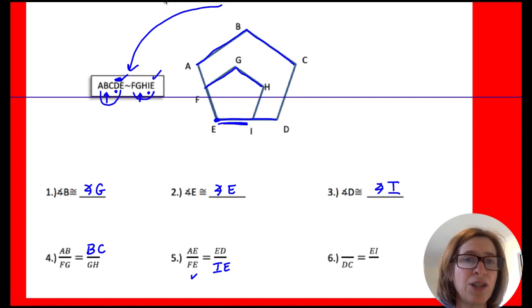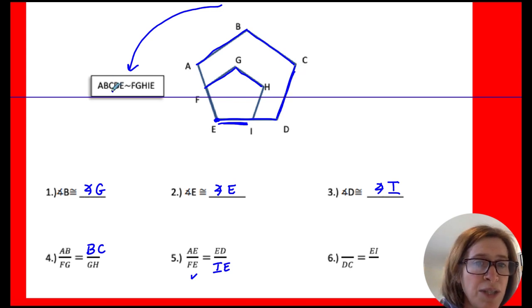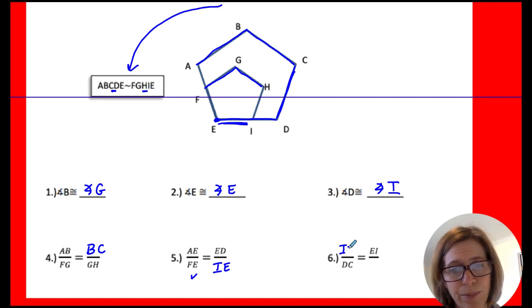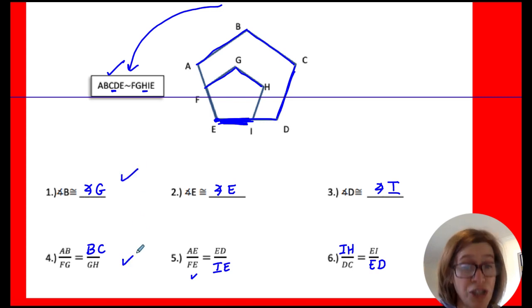Last one. This one's harder. So let me erase a little bit here. DC. So I want to see what DC corresponds to. DC is in the bigger polygon, so DC corresponds to IH. So if I wanted to write a proportional relationship, then it would be EI that I have right here to then ED. So that's how you take a similarity statement and write congruent statements and proportions.